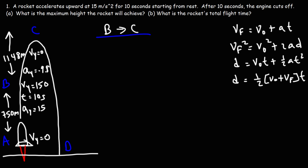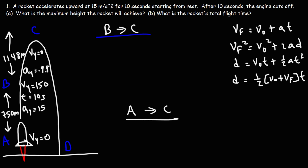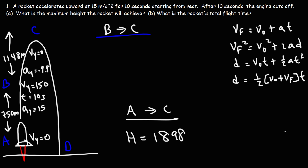Now we have the answer for part A. The maximum height is the displacement from point A to point C, which is the sum of the two displacements: 750 + 1148 = 1898 meters. That is the final answer for part A, rounded to the nearest whole number.